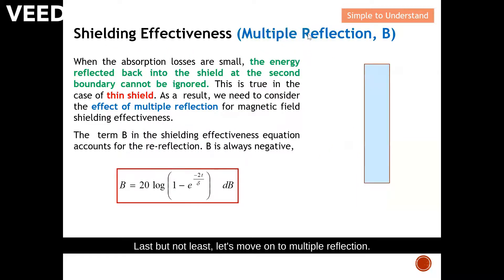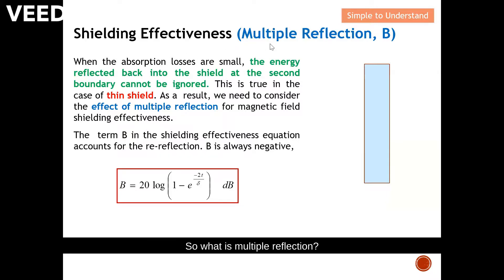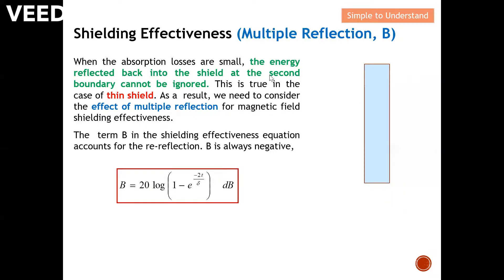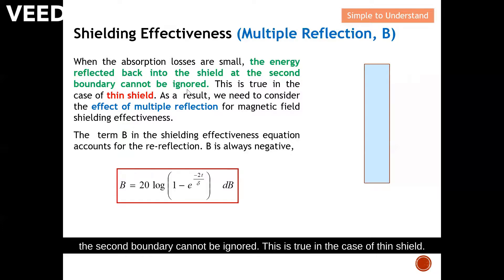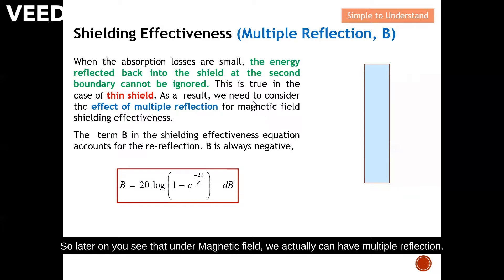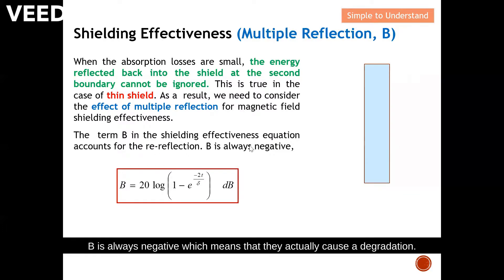Last but not least, let's move on to multiple reflection. Remember, multiple reflection actually causes a degradation of shielding effectiveness. What is multiple reflection? When the absorption losses are small, the energy reflected back into the shield at the second boundary cannot be ignored. This is true in the case of thin shields, so we need to consider the effect of multiple reflection, particularly for magnetic fields. B is always negative, meaning it causes a reduction in shielding effectiveness.